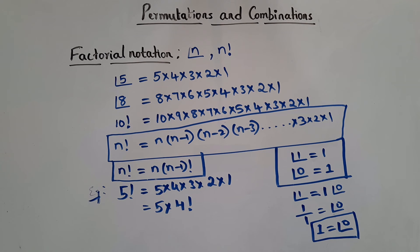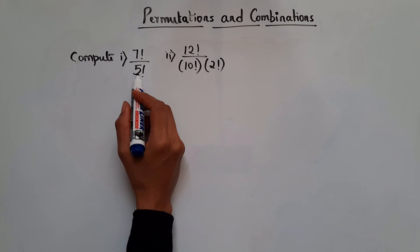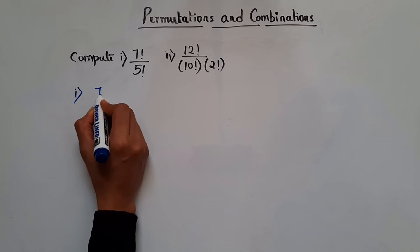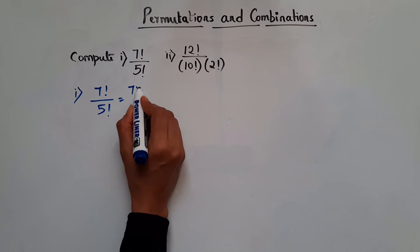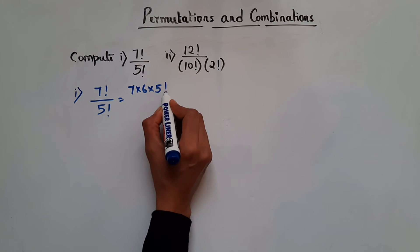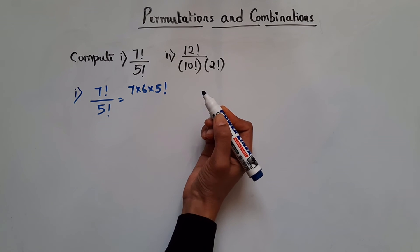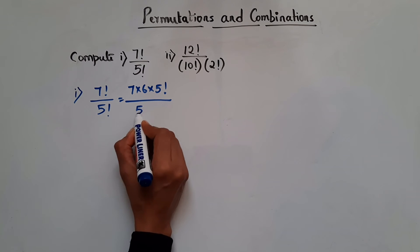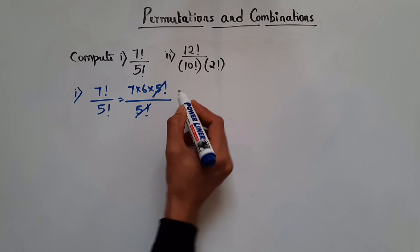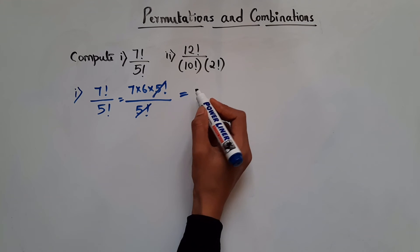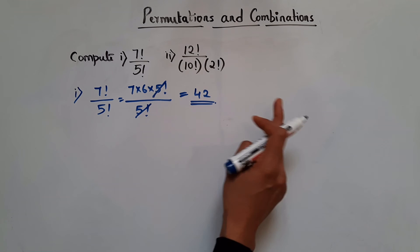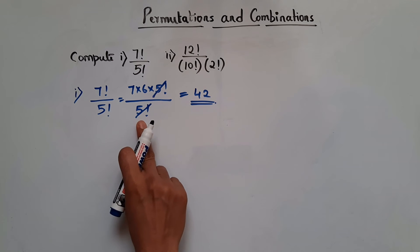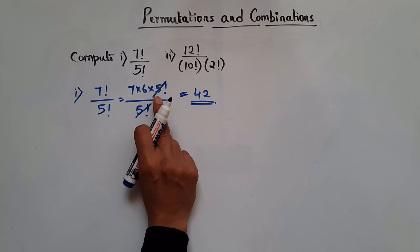Now let's see problems. Compute 7 factorial divided by 5 factorial. We know 7 factorial is 7 × 6 × 5 factorial. Dividing by 5 factorial, we can cancel the 5 factorial terms. So we are left with 7 × 6 = 42.